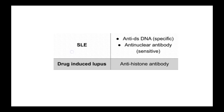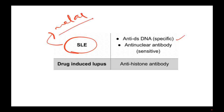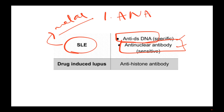The first disease is SLE, systemic lupus erythematosus — this is where you have the malar rash and all of that. The two antibodies to remember are anti-dsDNA (double-stranded DNA) and ANA, anti-nuclear antibody. The first test to do is ANA, as it is the most initial and sensitive test. When the patient is negative for ANA, it means the patient does not have the disease.